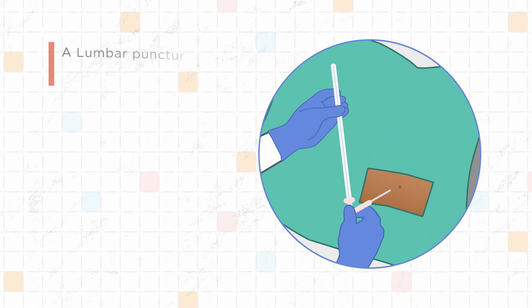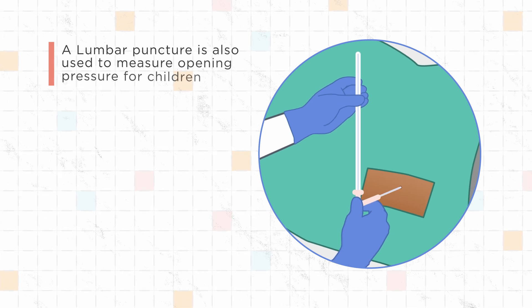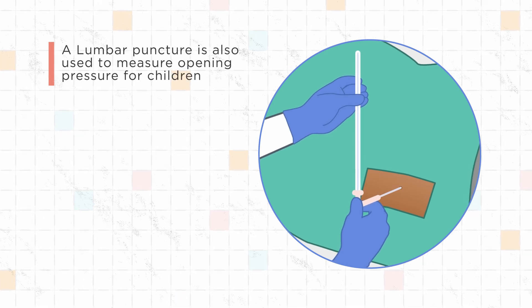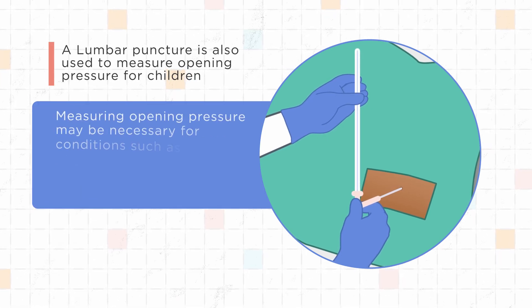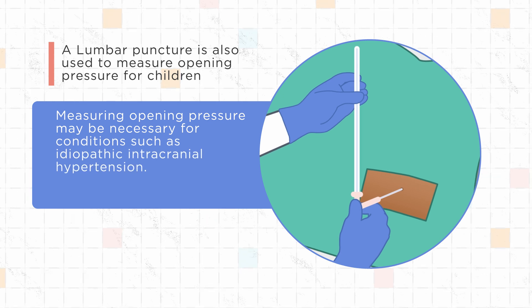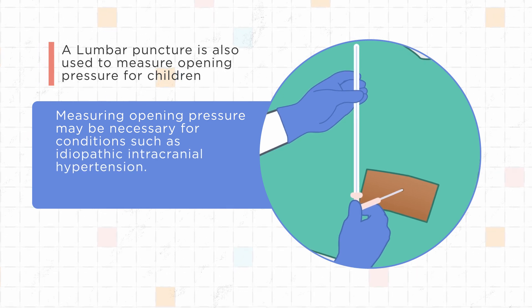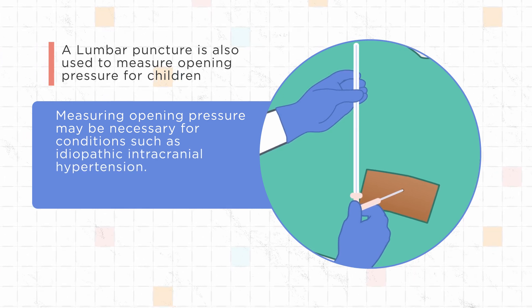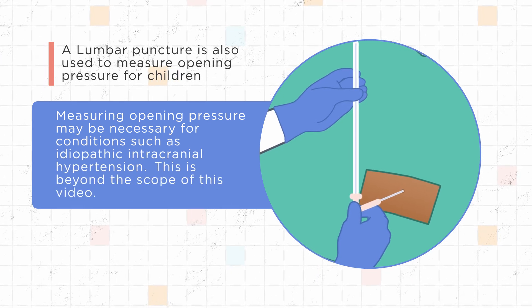A lumbar puncture is also used to measure opening pressure for children. Measuring opening pressure may be necessary for conditions such as idiopathic intracranial hypertension, but this is beyond the scope of this video.